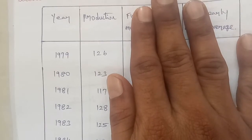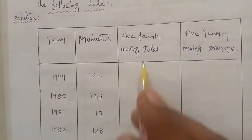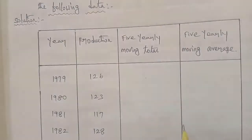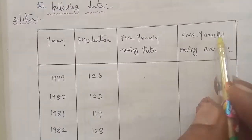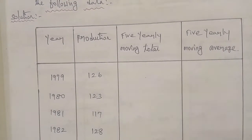If you have a 5-year moving average, you will find 5 years of moving total in one column, and next you will find 5 years of moving average in another column.